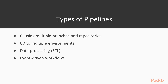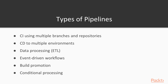A use case that is gaining popularity is an event-driven workflow where a pipeline is started based on an event — for example, a new image is uploaded by a user. Build promotion is another example that combines multiple stages, such as build, test, and generating artifacts and documentation to be promoted to a storage repository. Finally, any process requiring conditional processing and dependencies between steps is also a good candidate for a pipeline implementation.